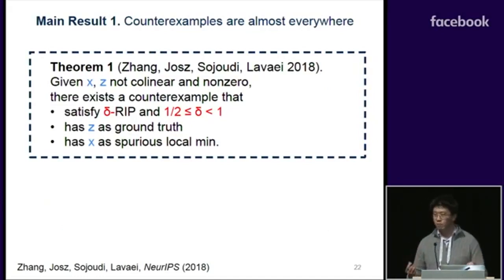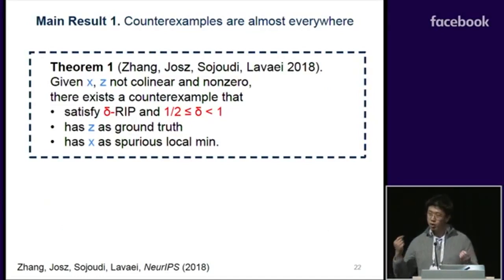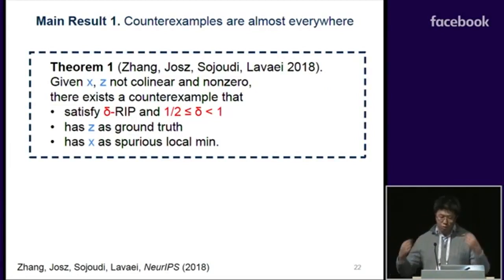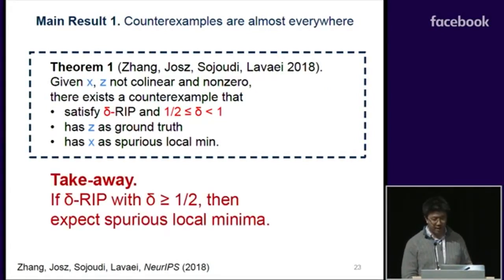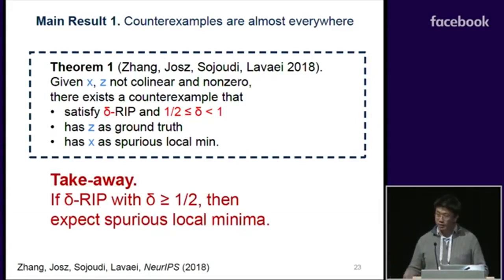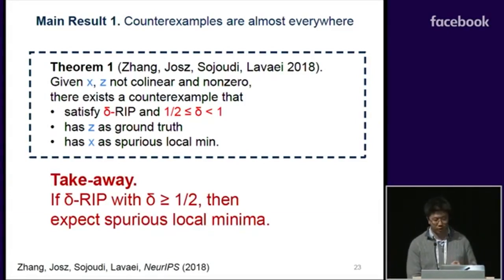Using this technique, we actually prove something stronger. If you give me a ground truth and a candidate point, almost certainly I can find you a counterexample with a delta of greater than one-half. In practice, once delta is greater than one-half, there's not too much we can do.